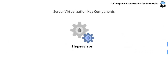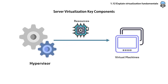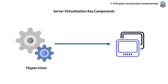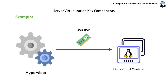The key components of virtualization include the hypervisor, which is hardware, software, or firmware capable of creating virtual machines and then managing and allocating resources to them. For example, you could create a virtual machine running Linux and then use a hypervisor to manage its resources, allocating it 2GB of RAM.